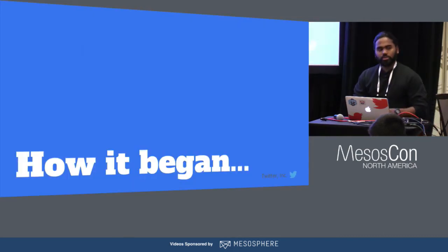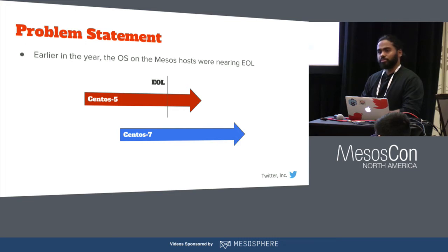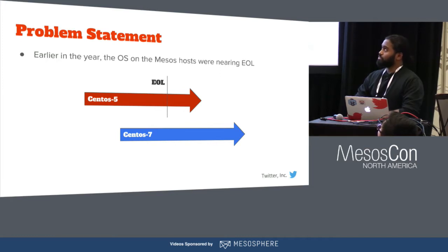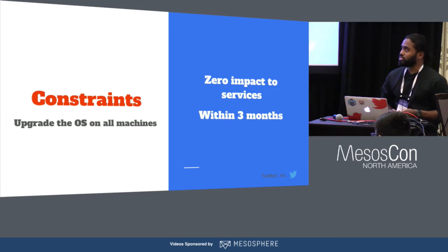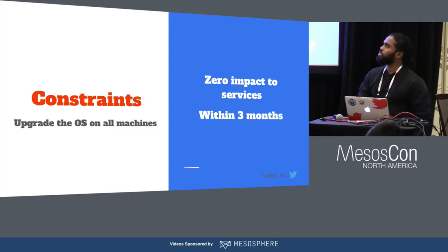So first off, let me tell you how it all began. During the beginning of the year, the Mesos hosts were running CentOS 5, and these were going towards end of life, which meant we had to upgrade the operating system on all of our hosts and move on to CentOS 7.